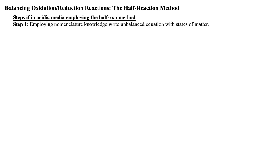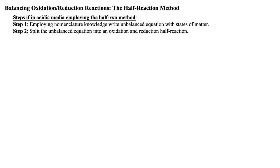The first step is to employ your nomenclature skills to write an unbalanced equation, which of course also includes states of matter. Next, split into an oxidation and reduction half-reaction. Then, for each half-reaction, several steps are required.